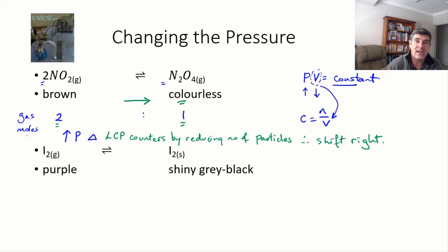But we're also in that extra space—in order to counteract that drop in pressure, we want more collisions, so we make more particles. Therefore, the equilibrium is going to shift to the left.